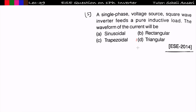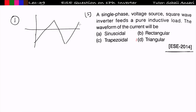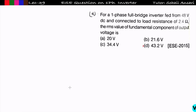The fifth question, from ESE 2014 prelims: a single phase voltage source square wave inverter feeding a purely inductive load — what will be the waveform of the current? The current waveform in a purely inductive load is triangular in nature. Option D is correct. This is straightforward if you have followed the lecture series.